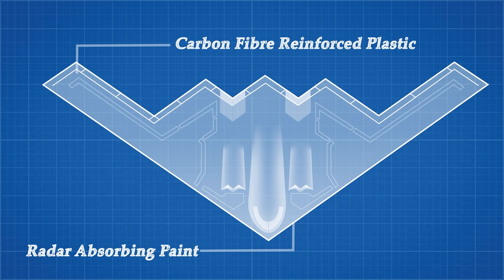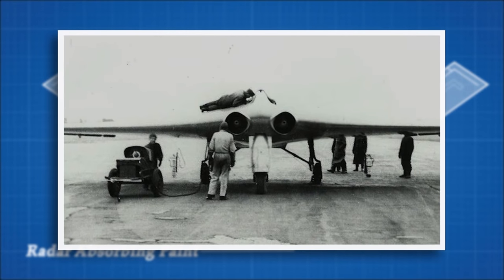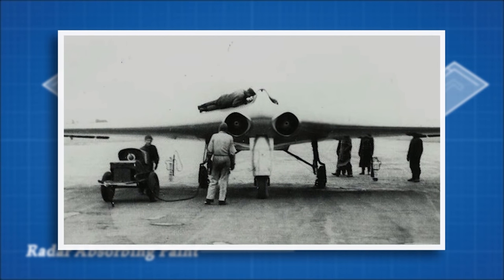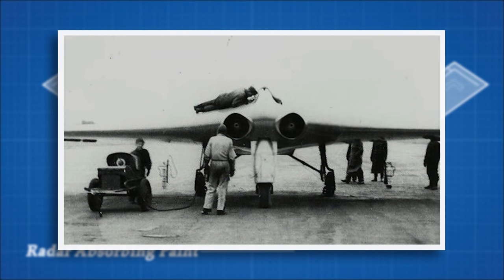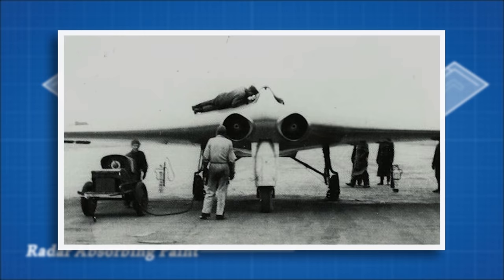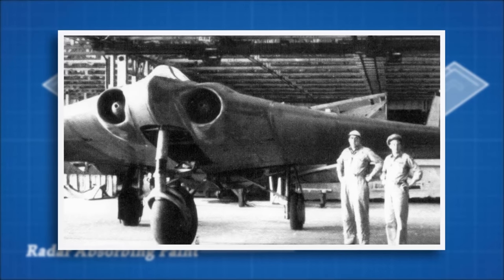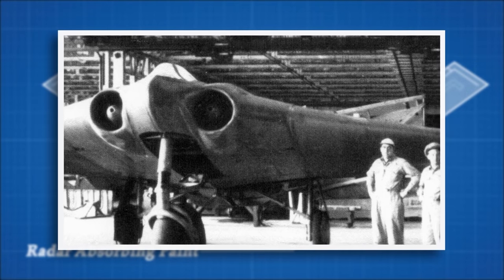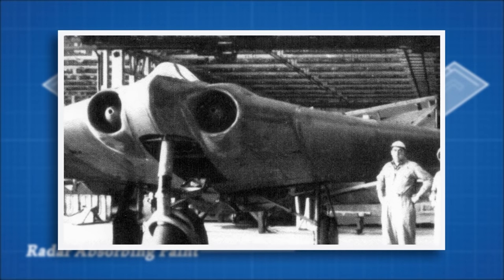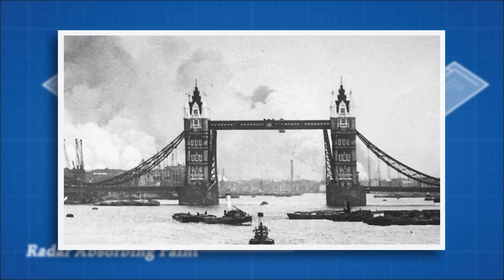What is even more terrifying to consider is the fact that the Nazis had created a very similar plane all the way back in 1944. The Horton 229 incorporated many of the same principles as the B-2, long before the stealth technology that made the B-2 possible was fully understood.